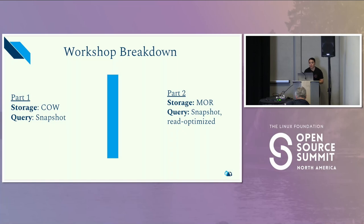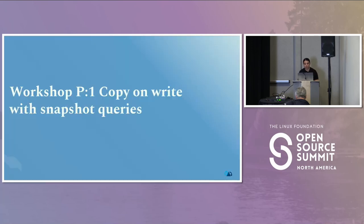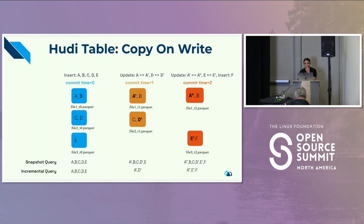Hoodie has two storage types. The first is copy-on-write, which is similar to what you'd find in a data warehouse. Copy-on-write is really good if you want a higher write amplification but a very low read amplification, and it's operationally less complex. If you're working with batch data sets ingesting every 15 minutes or every hour, you would probably want to use a copy-on-write table, which uses Apache Parquet.